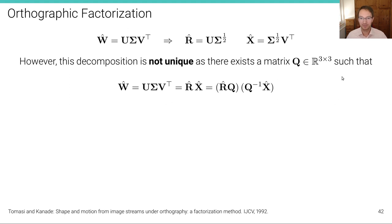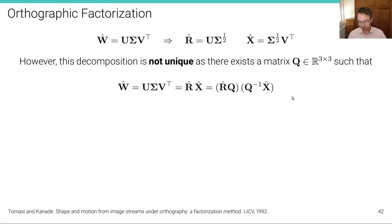Unfortunately, this decomposition is not unique as there exists a matrix Q, three-by-three matrix Q, such that with an arbitrary matrix Q, we obtain the same Ŵ. If I look at Ŵ and I have the singular value decomposition here into R̂ and X̂, then I can also multiply Q to R̂ and Q^(-1) to X̂ and I obtain the same Ŵ, but I have changed R̂ and X̂. So, another question is, well, how do we actually find the right R̂ and X̂?